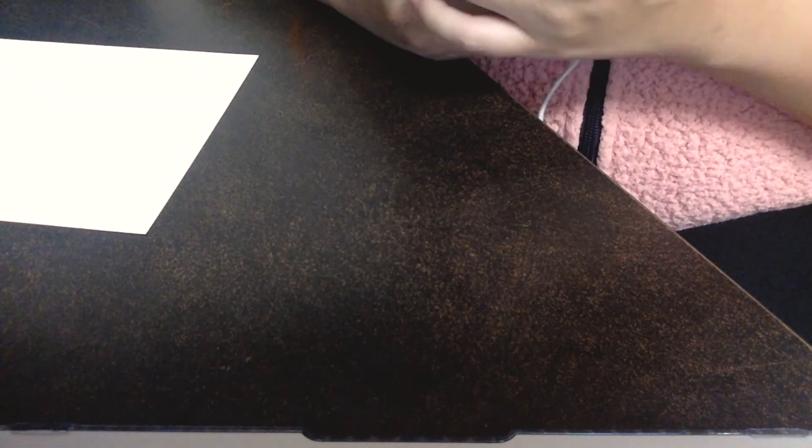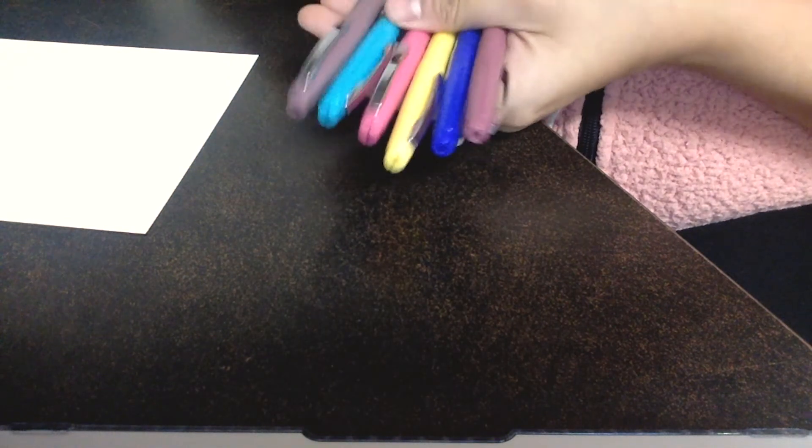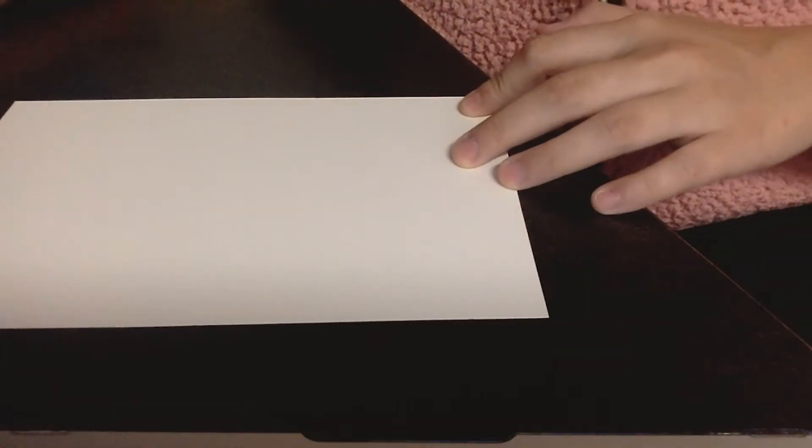For materials to use, you can use markers, crayons, color pencils, anything. I'm going to be using these pens right here, and you can even do just a pencil if you want. That's all you have, but I like to put color just because that helps me. So we're going to get started.